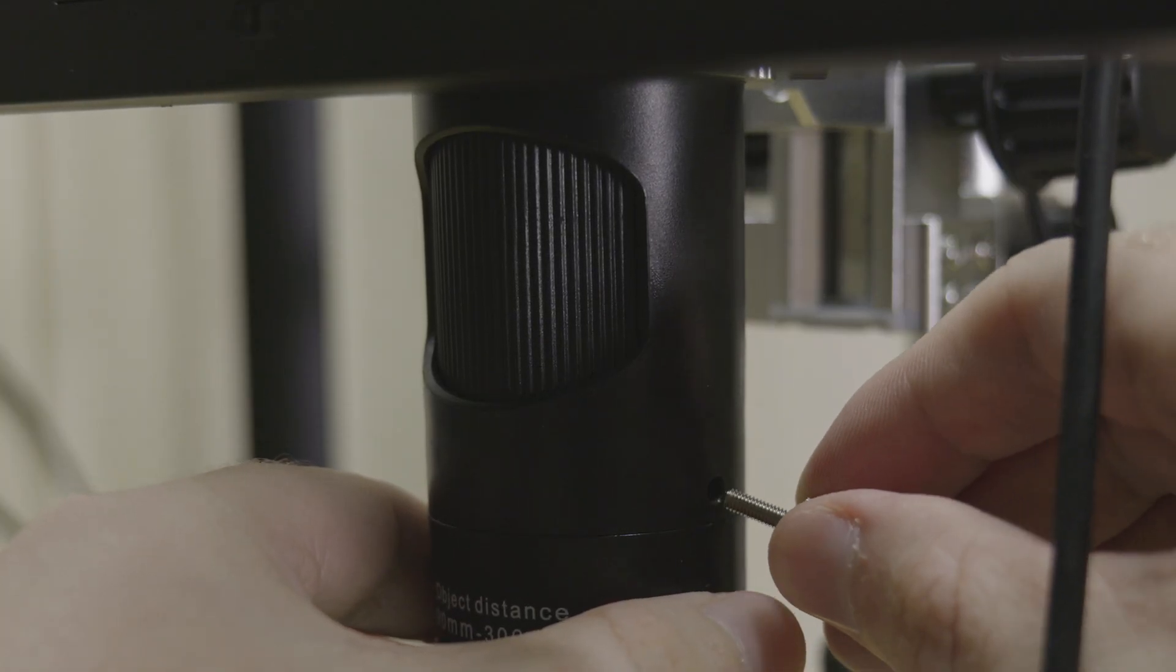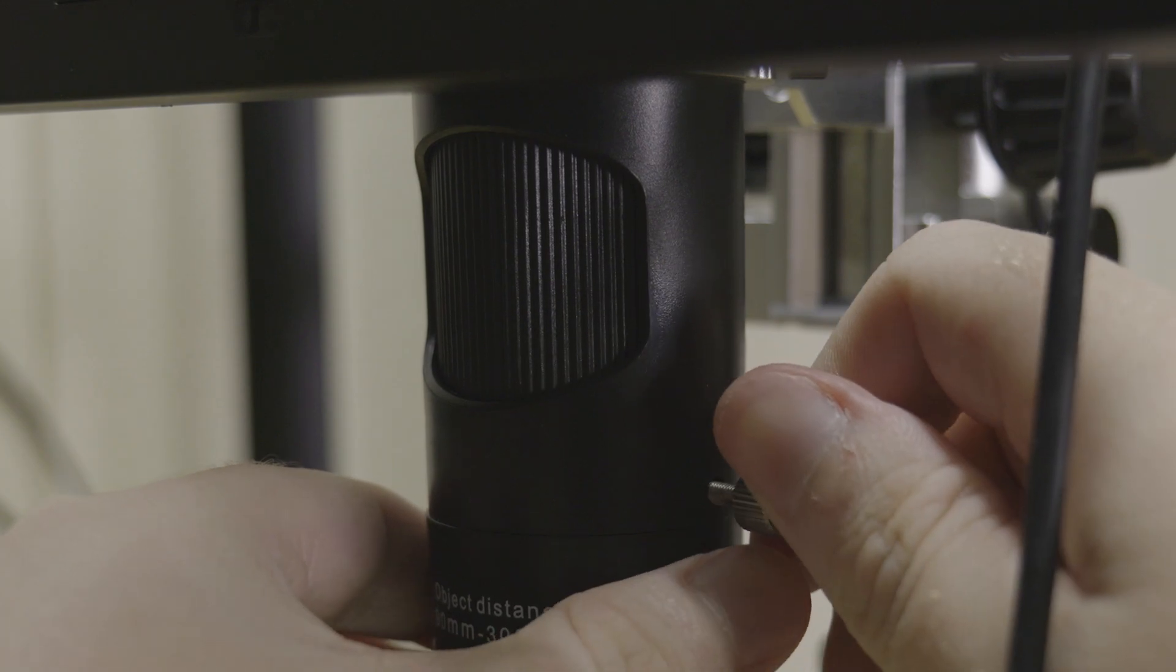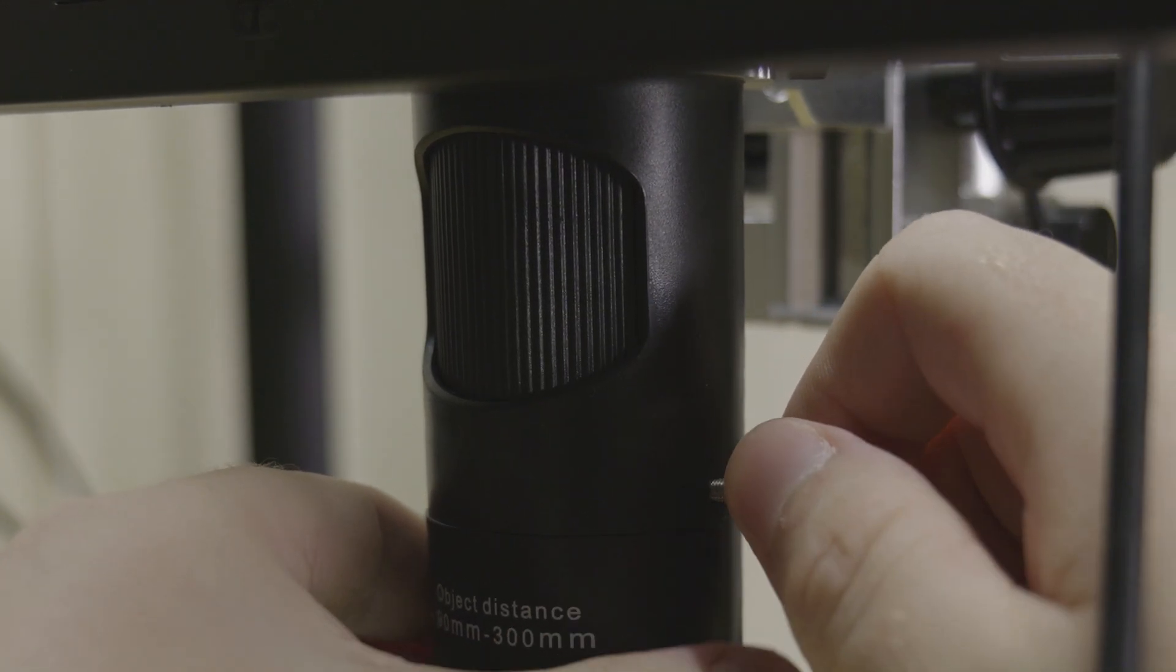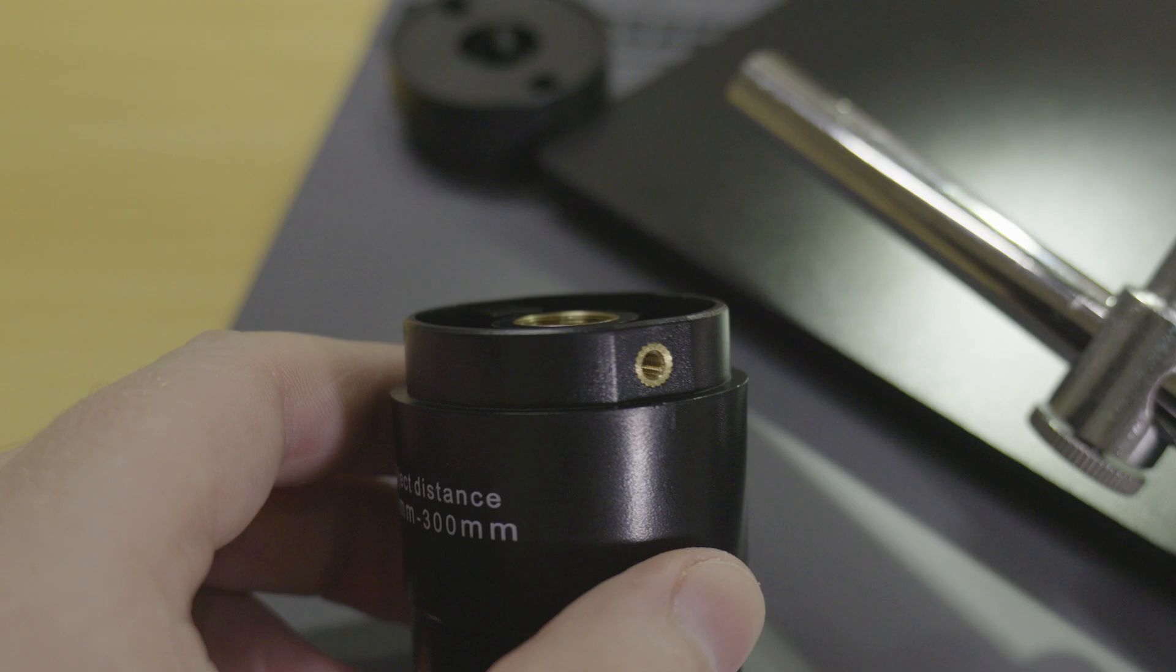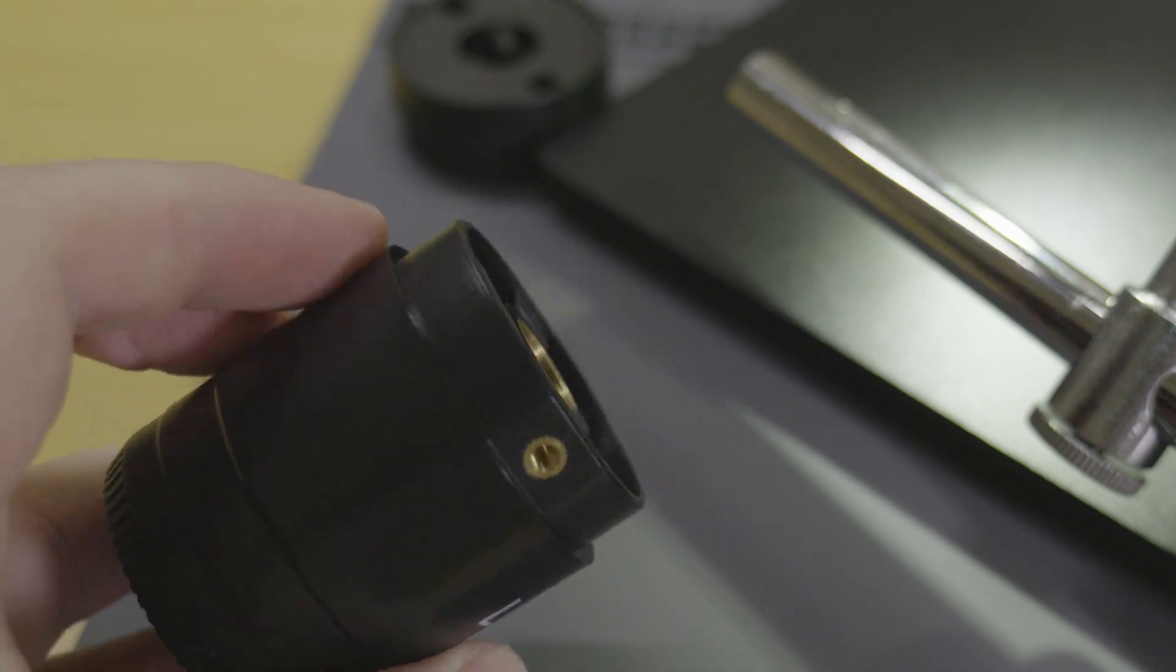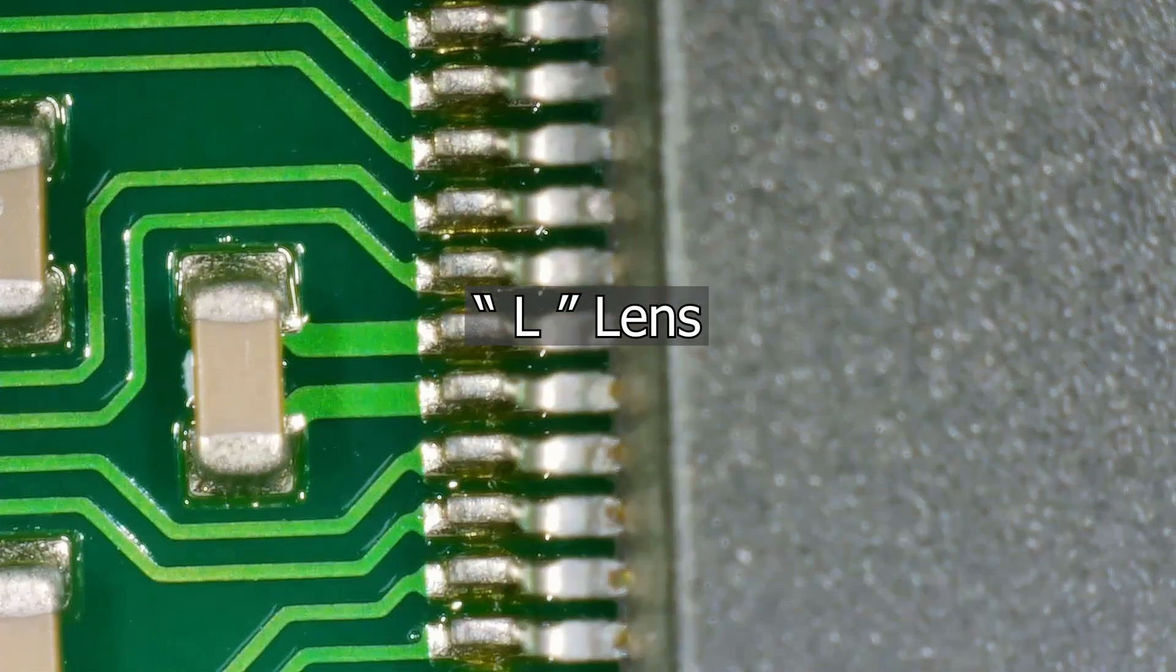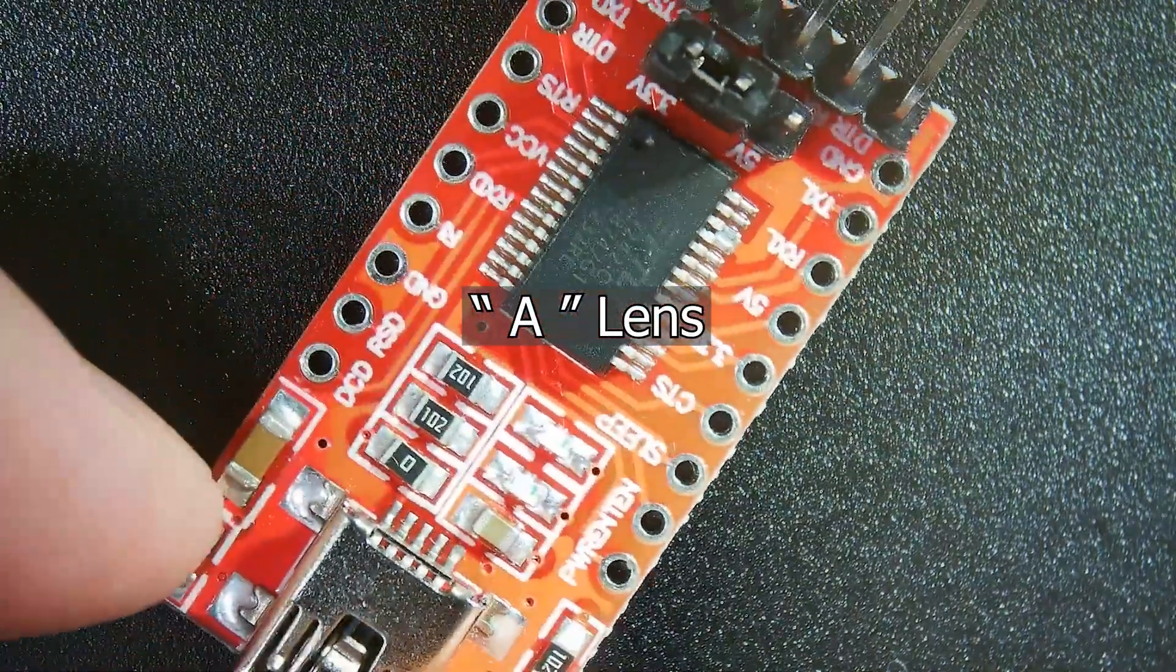The lenses attach via two non-captive thumb screws so they fall out when you pull them out. It would have been nice to see the lenses attached with like a bayonet style fitting as it does become quite tedious swapping between the lenses as the A and L lenses both have advantages when soldering or inspecting work.